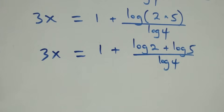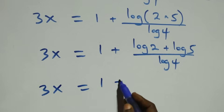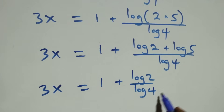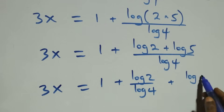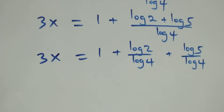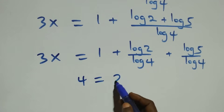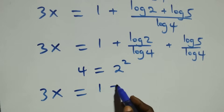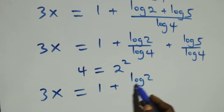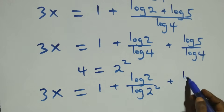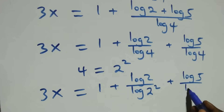We separate this into two fractions. We have three x equals one plus log two over log four plus log five over log four. Then we can write four as two times two, which is the same as two squared. So the denominator becomes log of two squared.